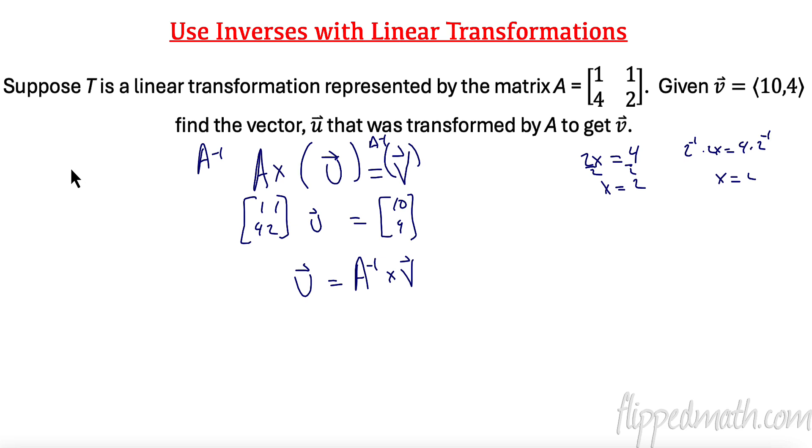So let's recall, how do I find an inverse? That is 1 over AD minus BC. I flip D and A, and I do the opposites of B and C. So AD, 1 times 2. BC is 4. D and A, so these switch, so this is 2, and this is 1, and this is going to be negative 1 and negative 4.